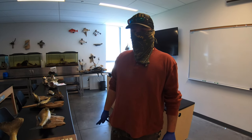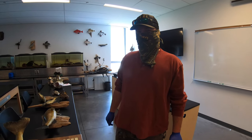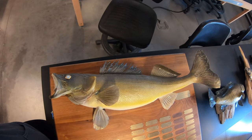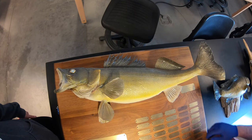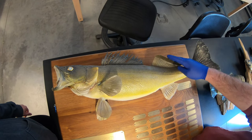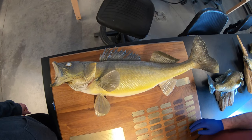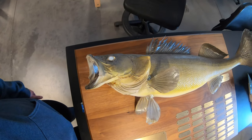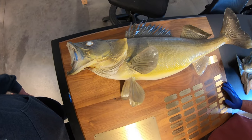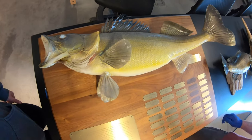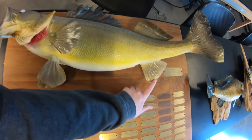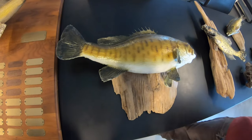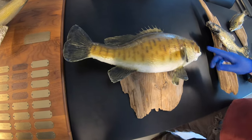We're going to go over the fish for the fish science final. Starting with the walleye — key characteristics are two dorsal fins, a spiny dorsal fin and a soft dorsal fin. Another characteristic that not all walleye have is that whitish marble eye. Sometimes they do have white tips on their fins.